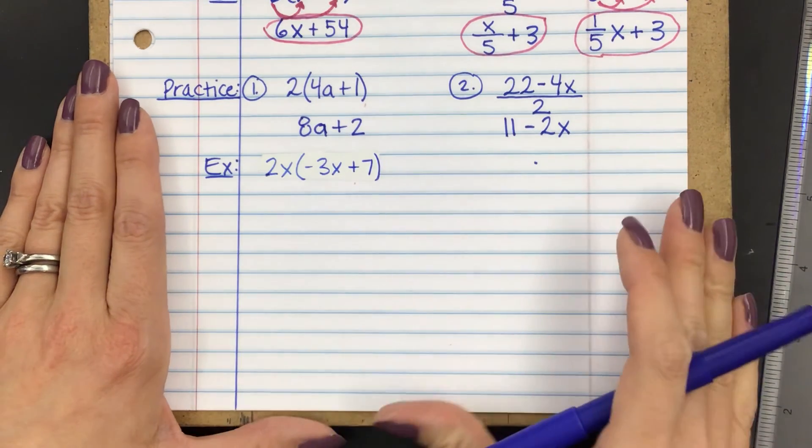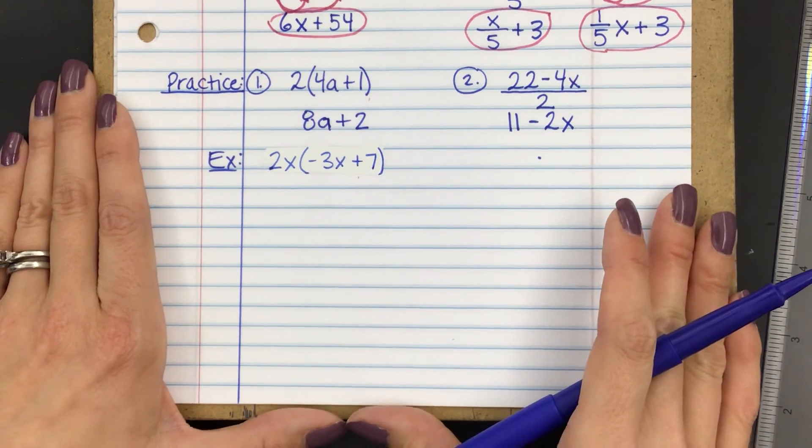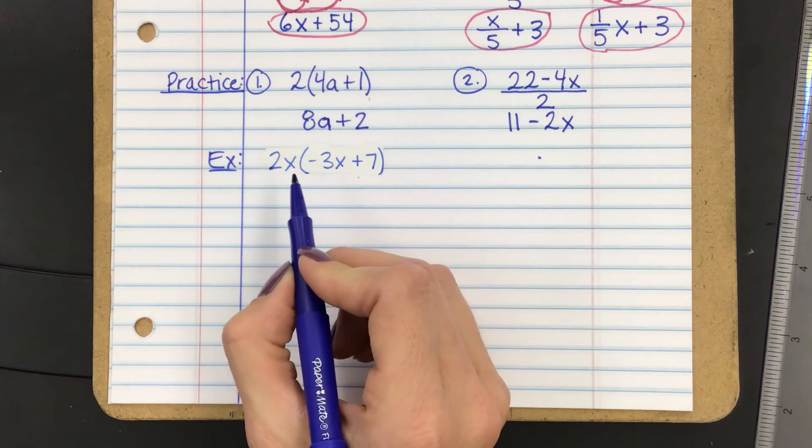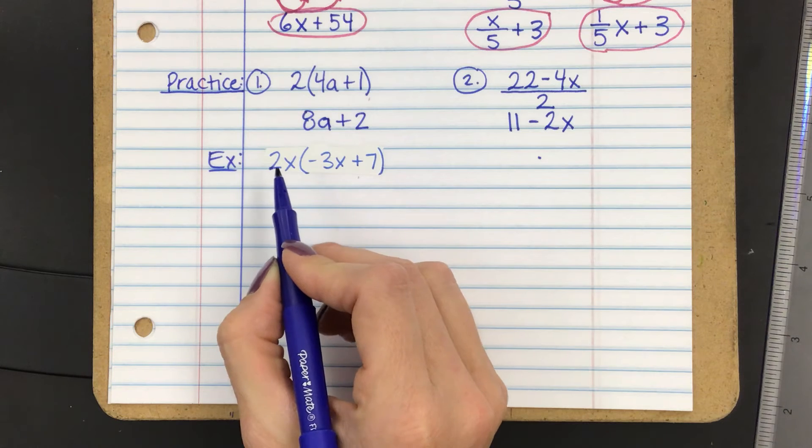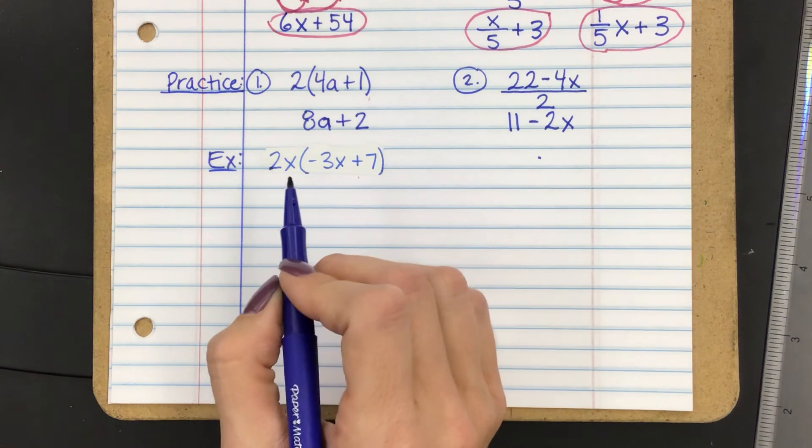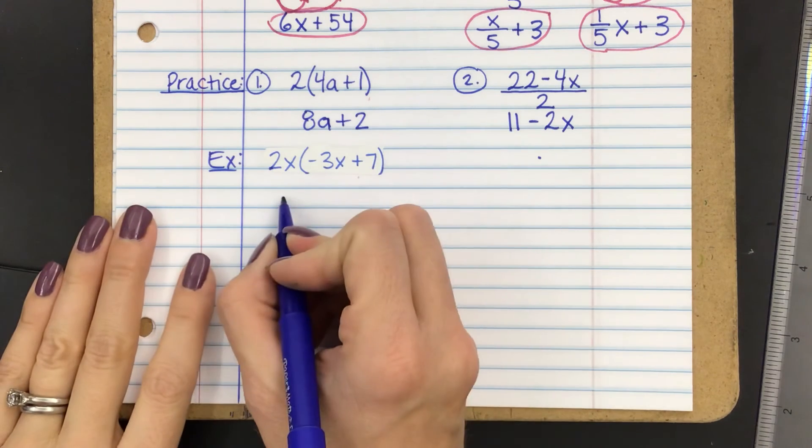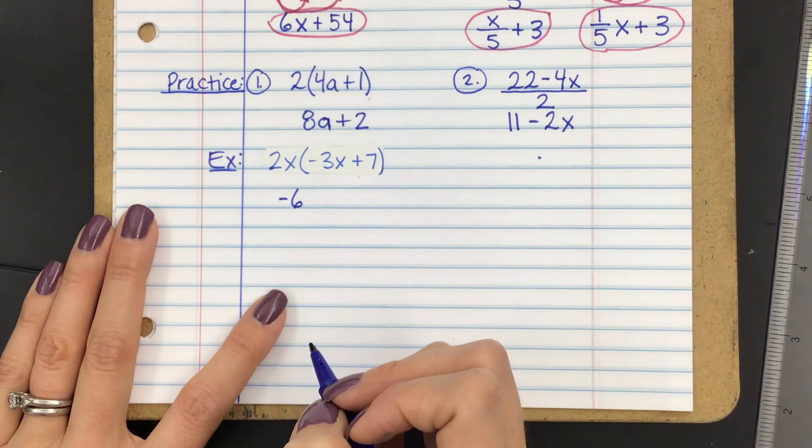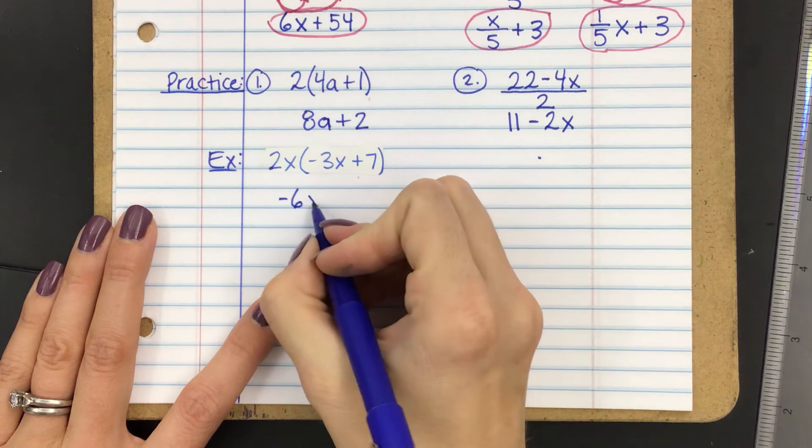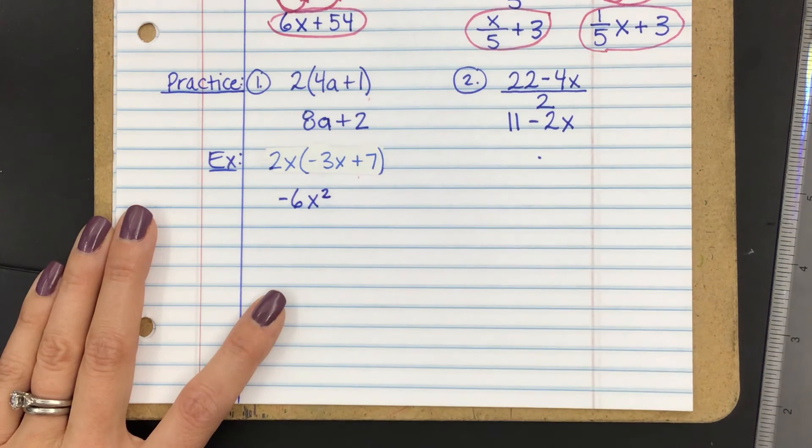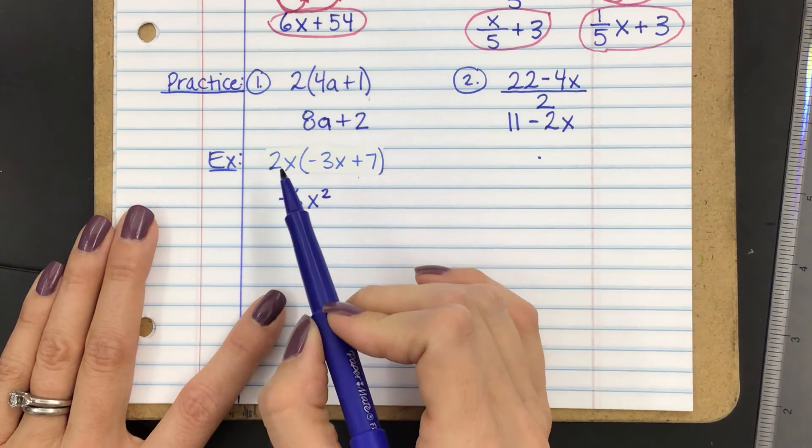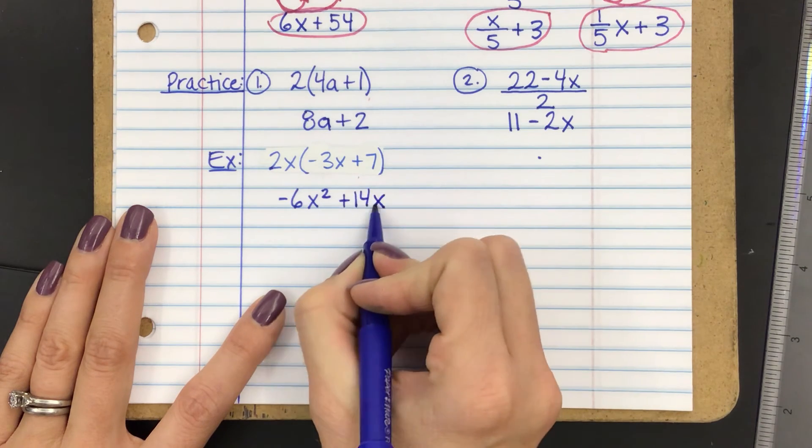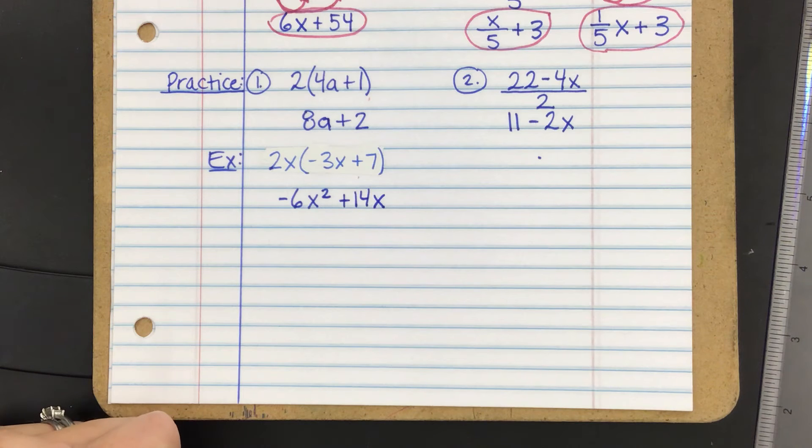Let's talk about this. I'm adding more negatives in. We've got some more variables. When we're distributing the 2x, we're going to be multiplying first 2x by negative 3x. So just focus on the numbers first. 2 times negative 3 is negative 6. What is x times x? X squared. X squared. I heard it. X squared. Good. And then 2x times 7. 14x.